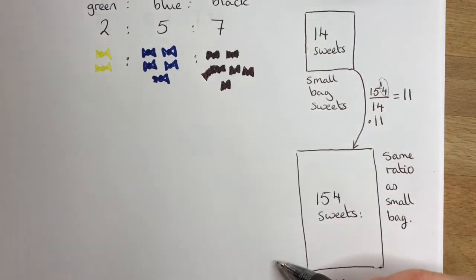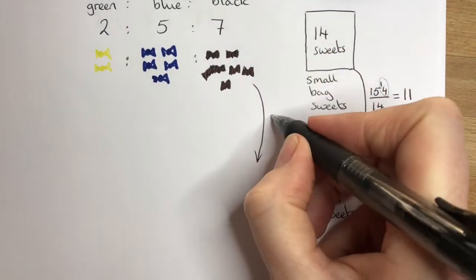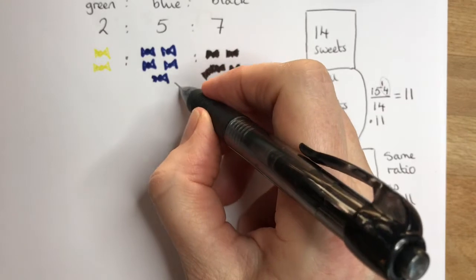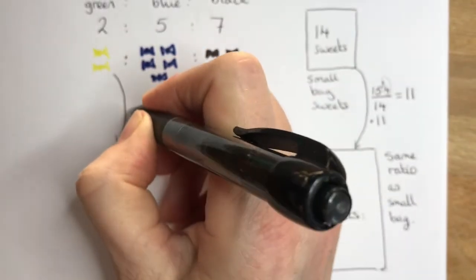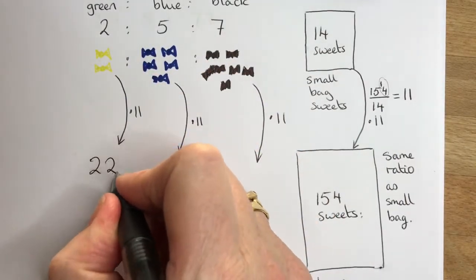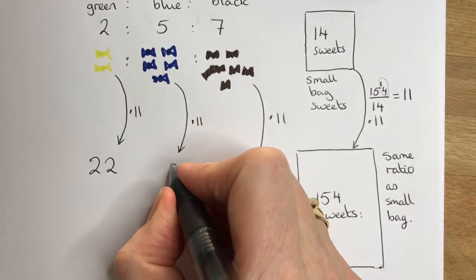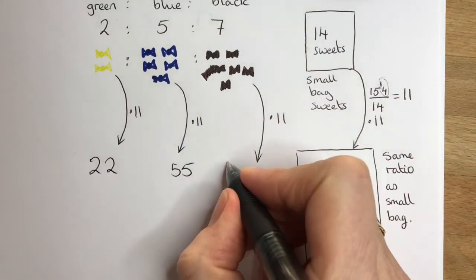We do exactly the same here: multiply the number of black sweets by 11, multiply the number of blue sweets by 11, and multiply the number of green sweets by 11. 2 times 11 is 22, 5 times 11 is 55, 7 times 11 is 77.